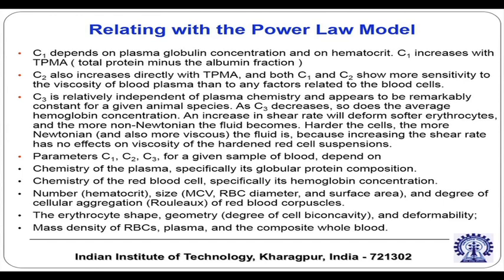As C3 decreases, so does the average hemoglobin concentration, so it is dependent on hemoglobin concentration rather than species. An increase in shear rate will deform softer erythrocytes, making the fluid more non-Newtonian. Harder cells make the fluid more Newtonian, because increasing the shear rate has no effect on the viscosity of a hardened red blood cell suspension.